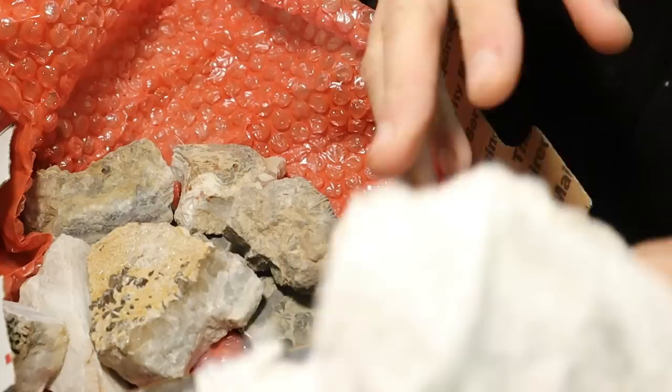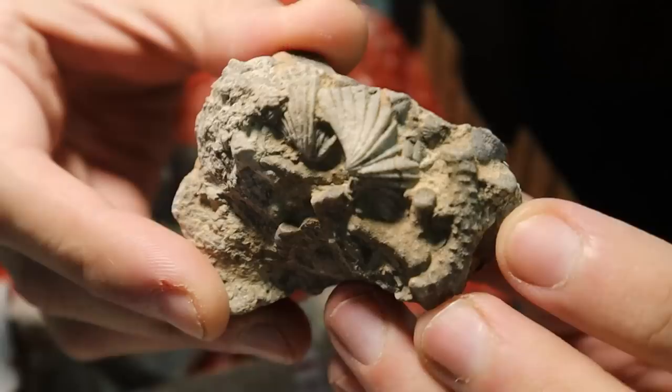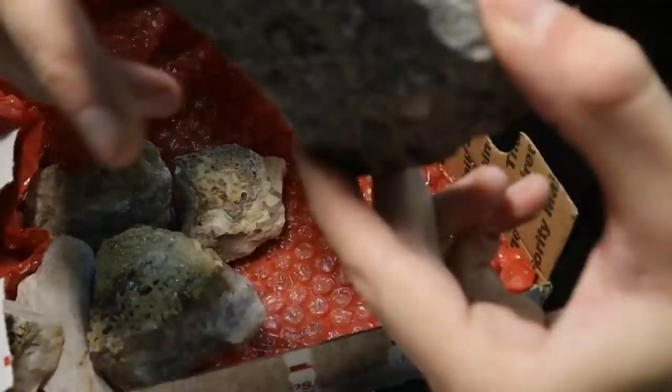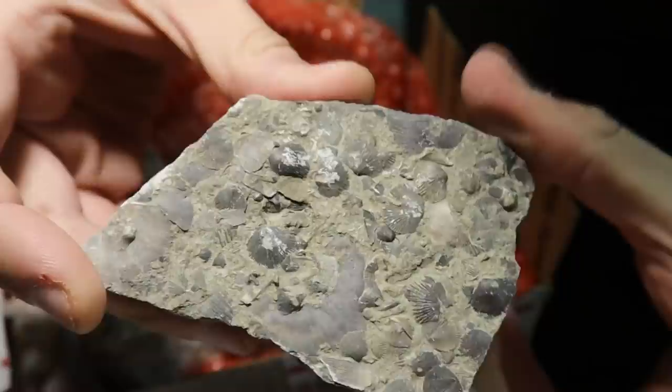We're going to open that last, we'll save that for last. Look at that, oh wow. That's freaking cool. So we got really nice brachiopods and I believe that's either coral or crinoid right next to them. Wow, that's freaking awesome. There's a lot of brachiopods in here. Look at all the shells. That's awesome, I love it.